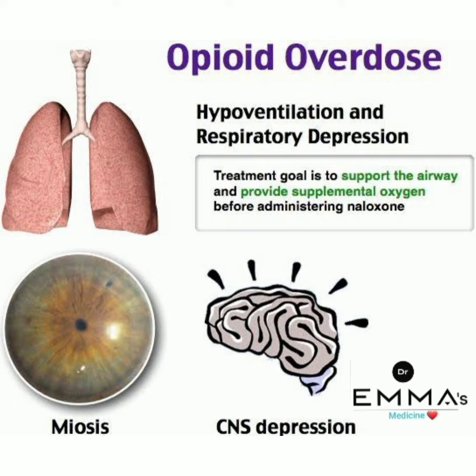To summarize: miosis and CNS depression develop in opioid overdose. In management, we first secure the airway before giving naloxone, and then we administer naloxone as it is the antidote for opioid overdose.